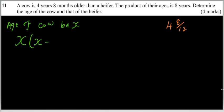This question we can start by saying, let age of the cow be X. Therefore, if the age of the cow is X, the age of the heifer is X minus 4 years 8 months. Now, we convert 8 months to years. So this is 4 and 8 over 12 months. This equals 4 and 2 thirds years when you divide by 4.